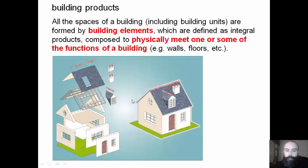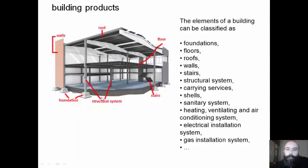All the spaces of a building, including building units, are formed by building elements. We can define building elements as integral products composed to physically meet one or some of the functions of a building. The elements of a building can be classified as foundations, floors, roofs, walls, stairs, structural systems, gas installation systems, electrical installation systems, and so on.